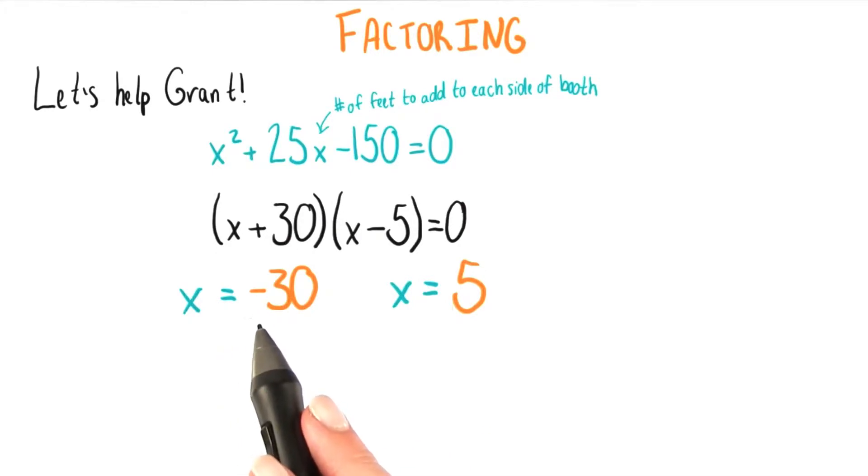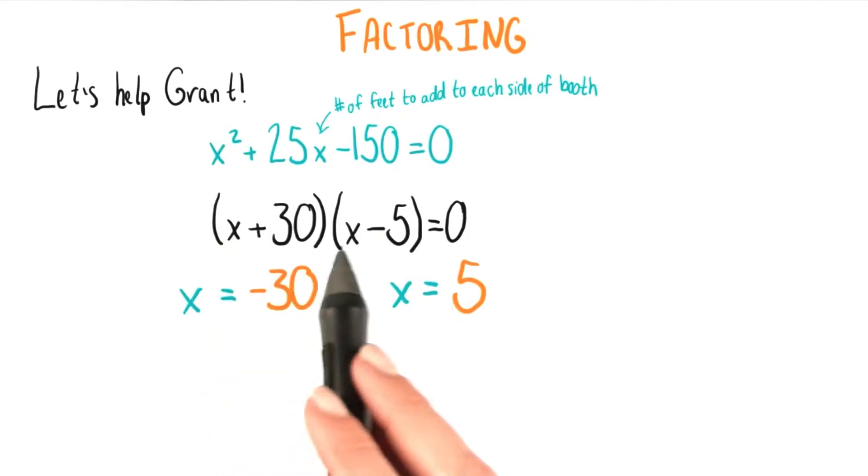As always when we're substituting in values for variables, we're consistent about what we plug in. If we're going with x equals negative 30, we put that in every spot where x is. Let's just double check to make sure that this is what we want to have happen.